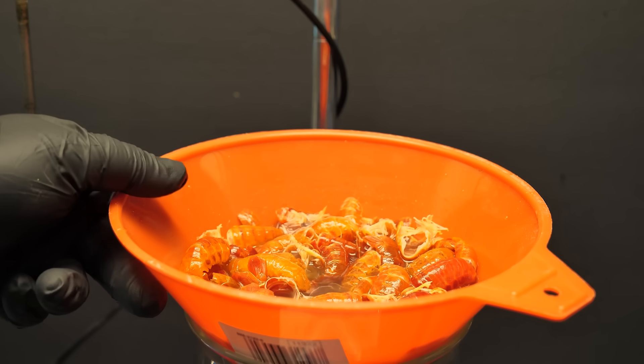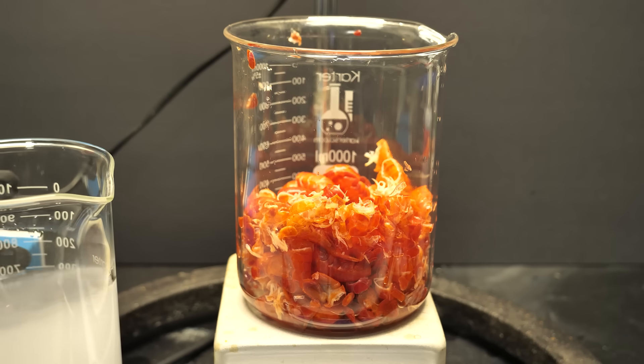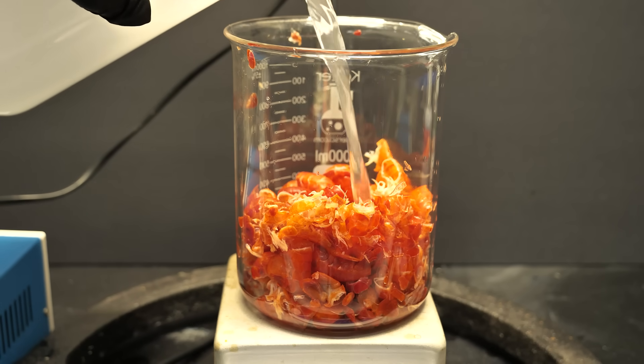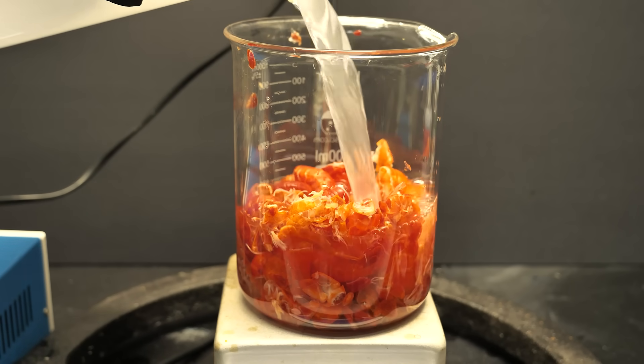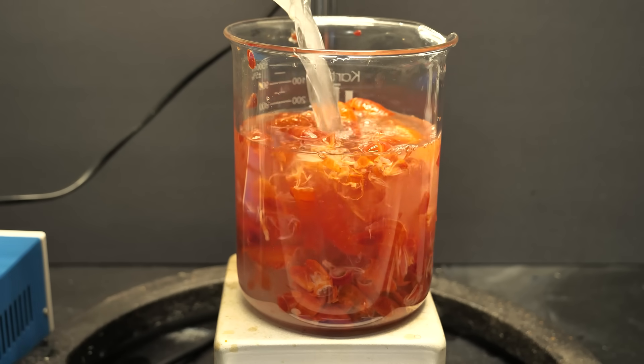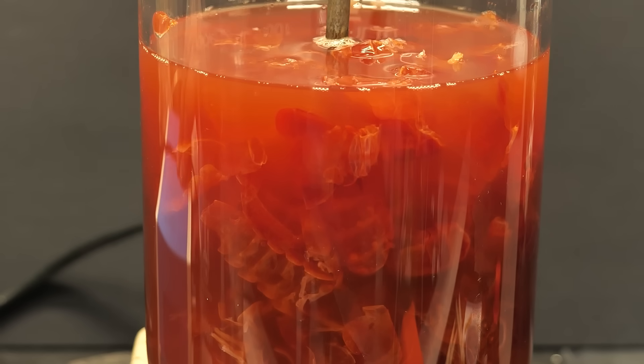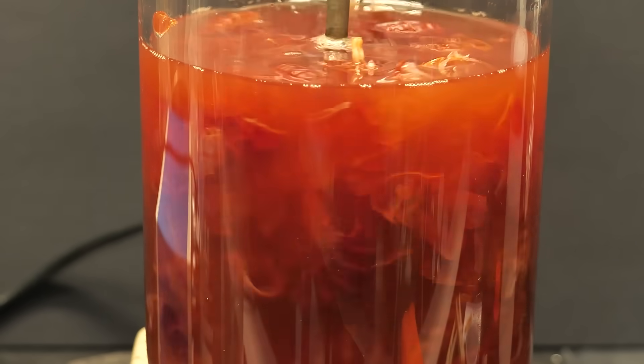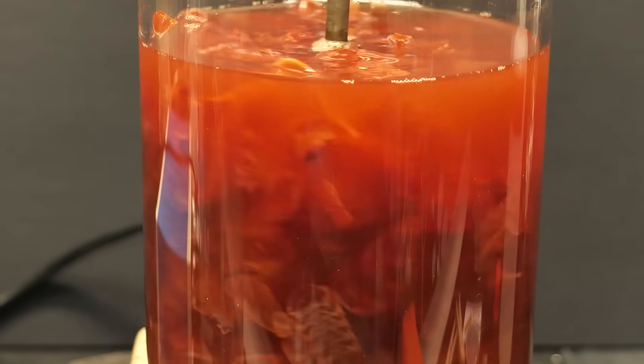Next, the shells are filtered to remove the acid. Then they're transferred to a fresh beaker, and a 10% solution of sodium or potassium hydroxide is added. To help speed things along, the temperature is brought up to about 90 degrees celsius, and it's left for at least two hours. This step will remove any proteins, and pretty much anything else that's left besides the chitin.